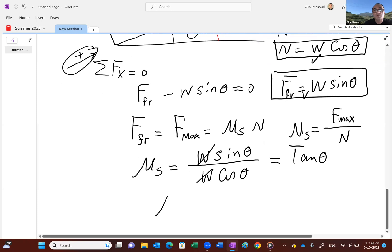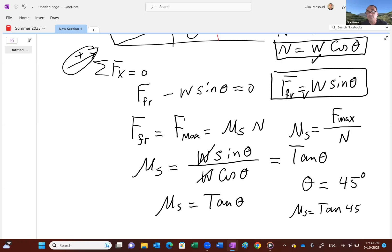So coefficient of static friction is tangent of the angle. So depending on the angle, if the angle is, say the angle is 45, you know, relatively large angle, the coefficient of static friction becomes tangent of 45, which we know is one.